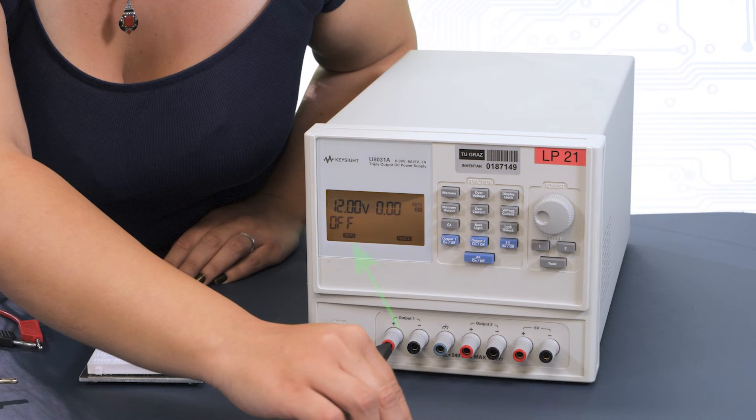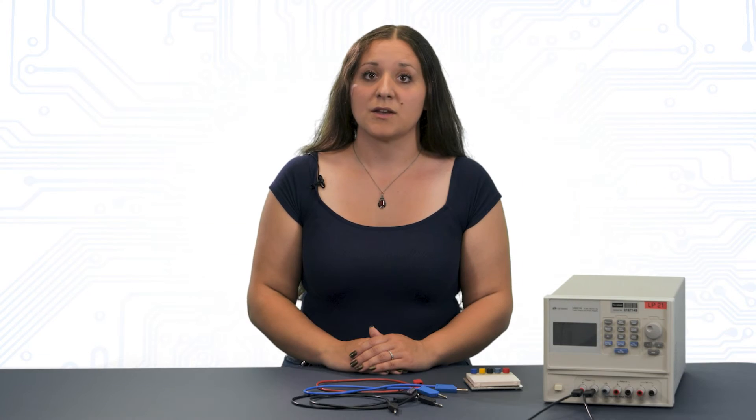If it is active, the symbol OCP appears on the display. To switch off the OCP, simply press the overcurrent button again.